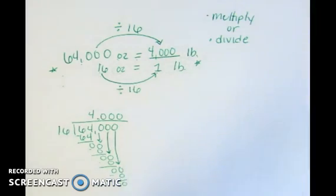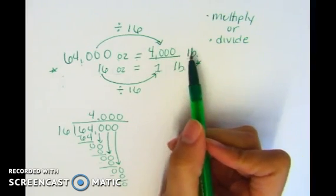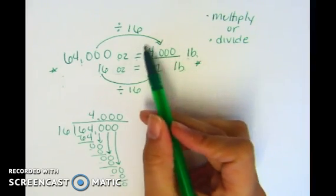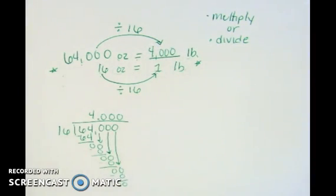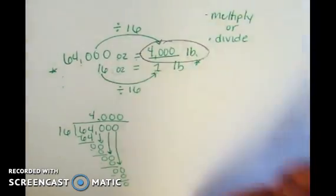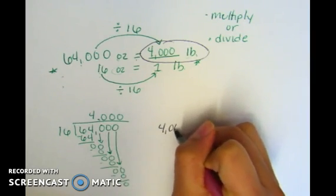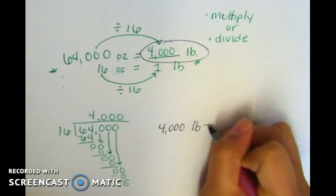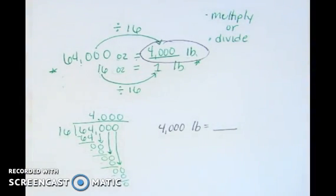If you're doing a problem where you don't find your final answer after the first conversion, chances are you might have to take this answer and convert it again. I'm going to go ahead and do that right now to show you how that would be done. I have 4,000 pounds and I'm going to convert it into something else. I am now doing this problem down here.